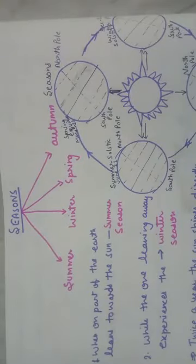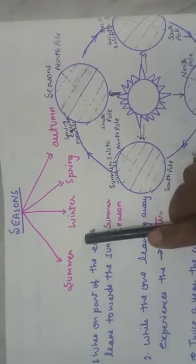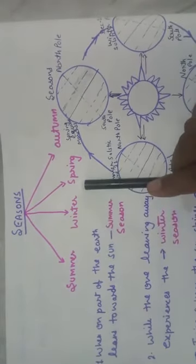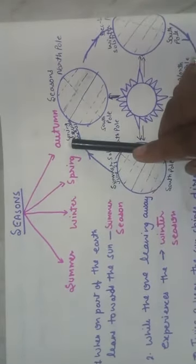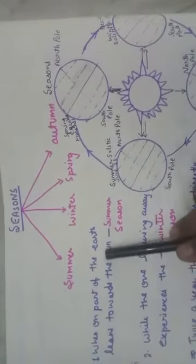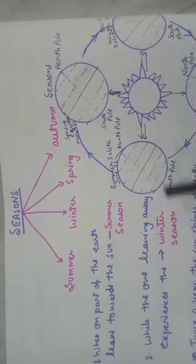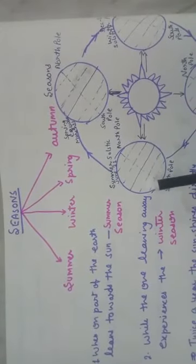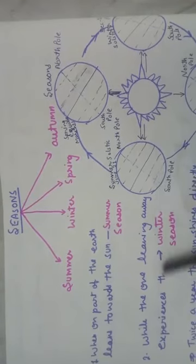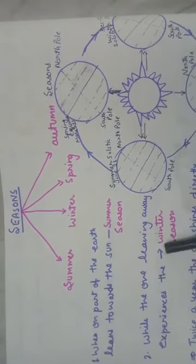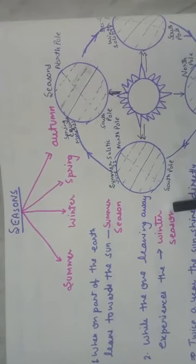Seasons. There are four types of seasons: summer season, winter season, spring season, and autumn season. When one part of the earth leans toward the sun, that is called the summer season. And when one leans away, that experiences winter season.